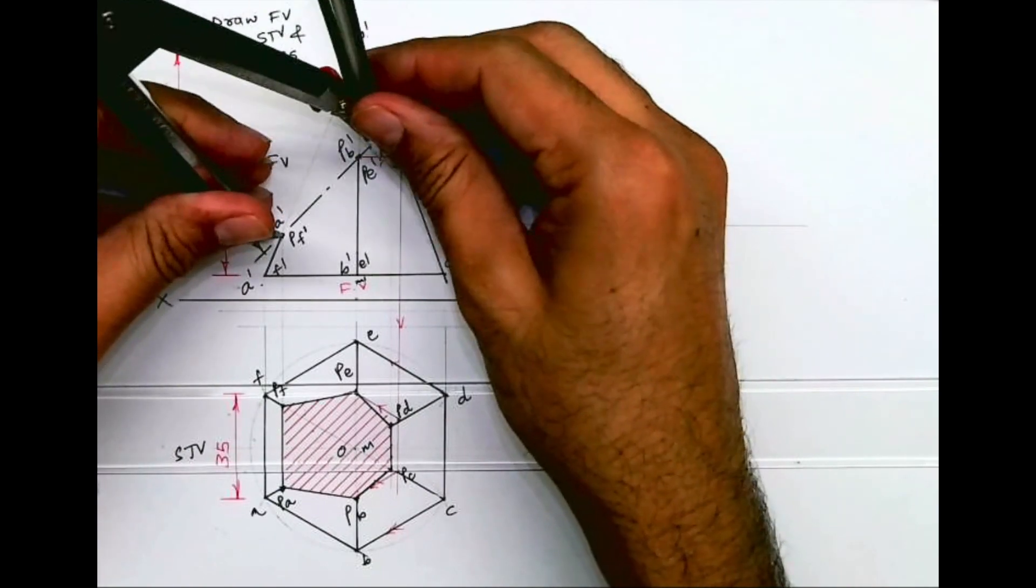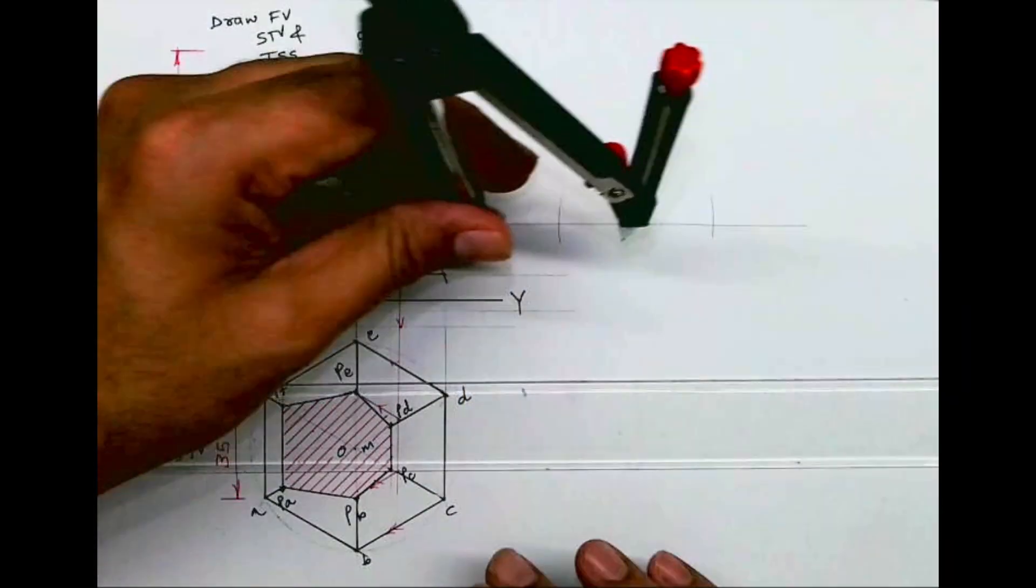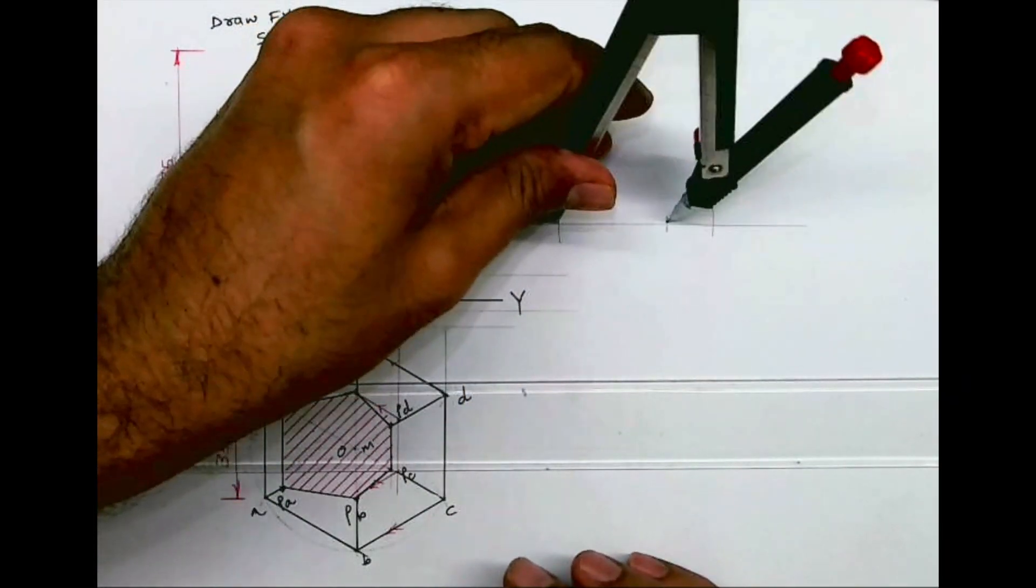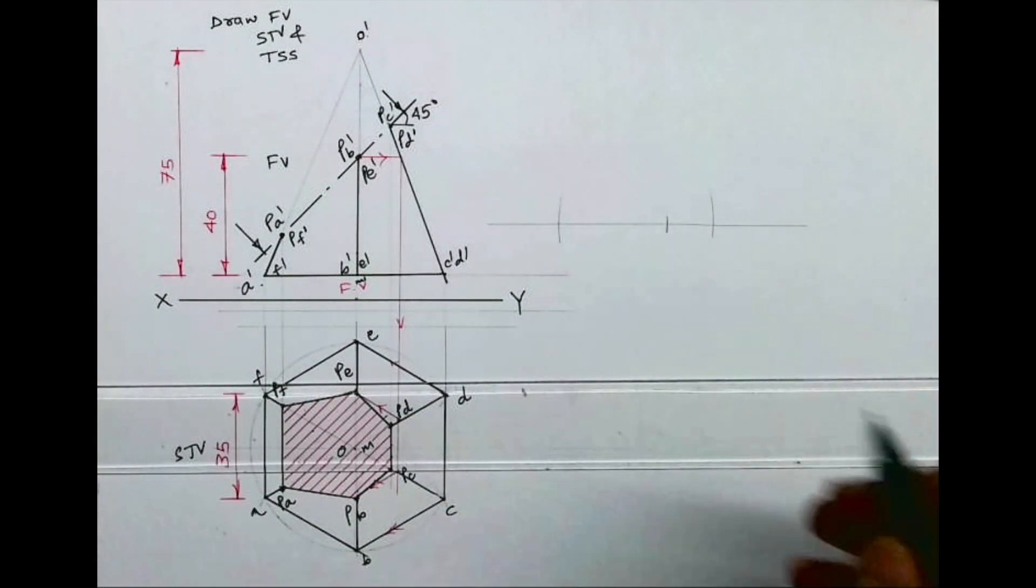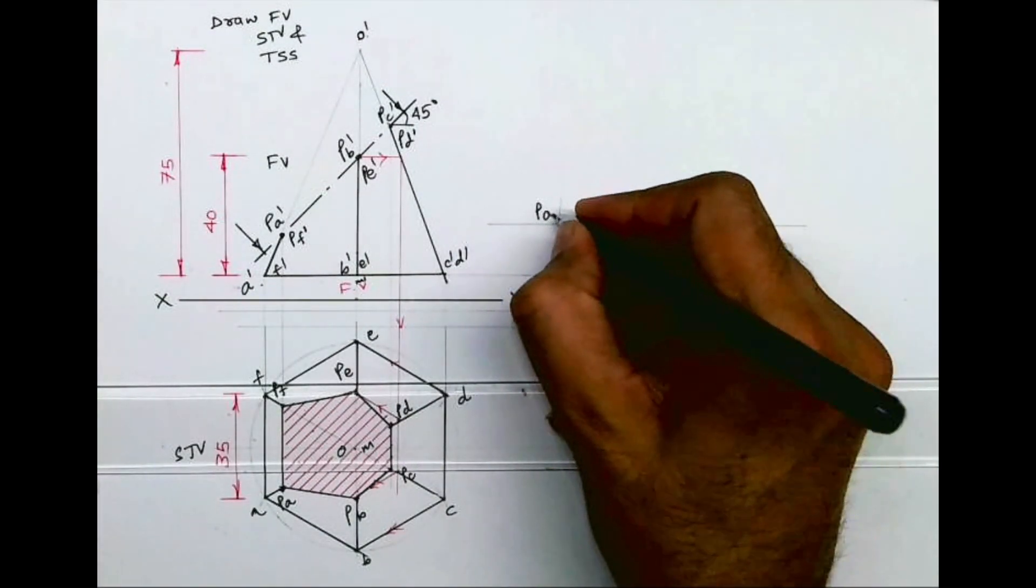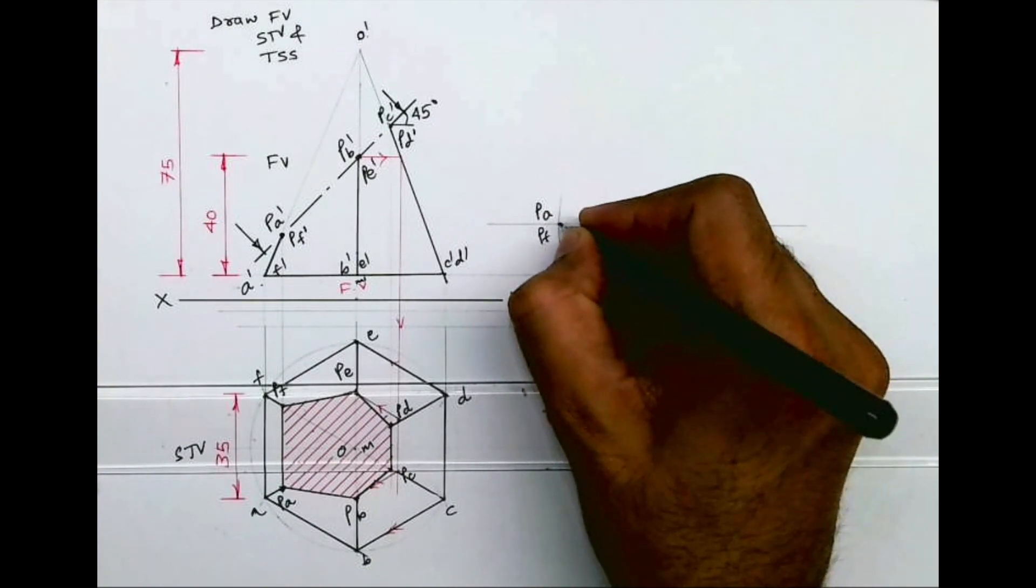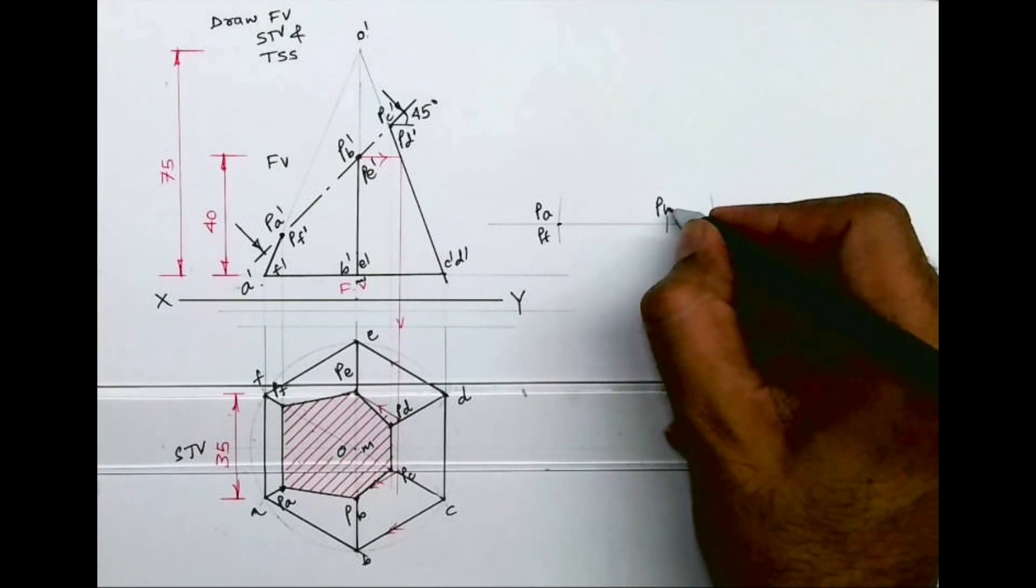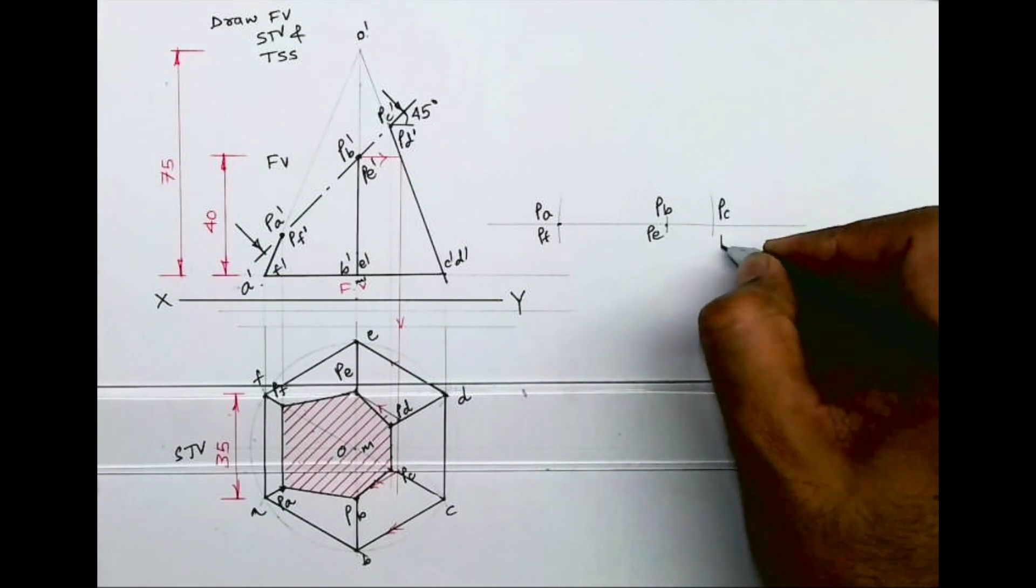Then from here, again we'll take PA dash to PB dash and we'll cut. So this is PA dash, or we can write PA, PF. This is PB, PE, and this is PC, PD.